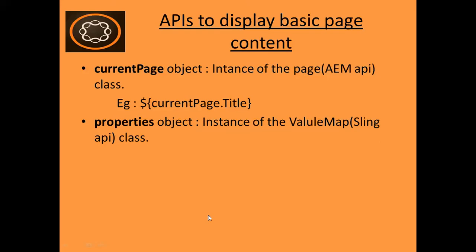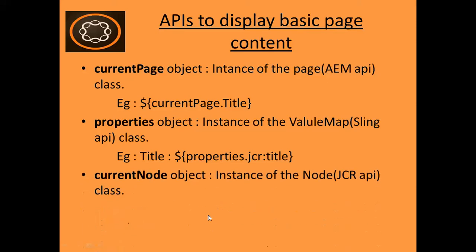The second is the properties object. It is the instance of the ValueMap class which comes under the Sling API. It contains all properties of the current resource. For example, in the expression you can write properties.jcr:title to fetch the title from the properties which is present in the JCR.